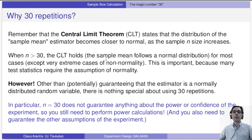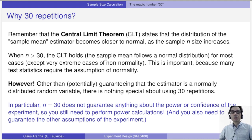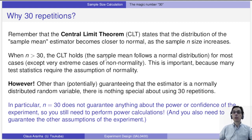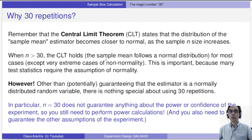This is why a lot of people recommend 30 repetitions. However, other than potentially guaranteeing the estimator is a normally distributed random variable, there's nothing special about 30 repetitions. In particular, n equals 30 does not guarantee anything about the power or the confidence of the experiment, as we discussed in the last video.